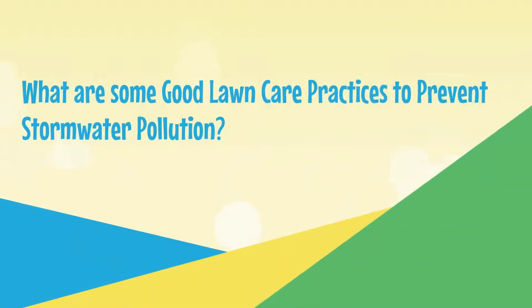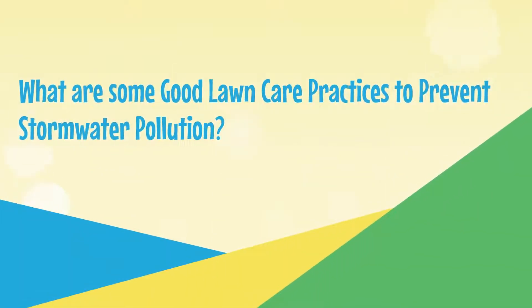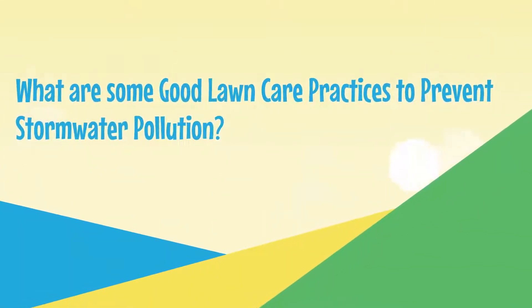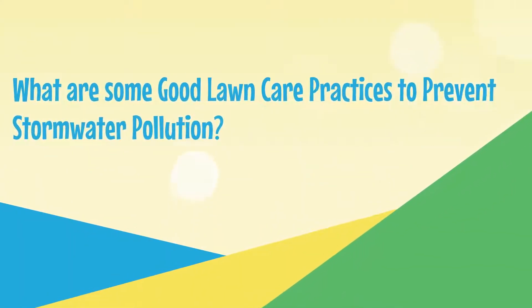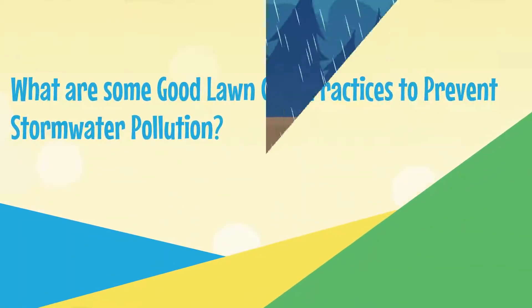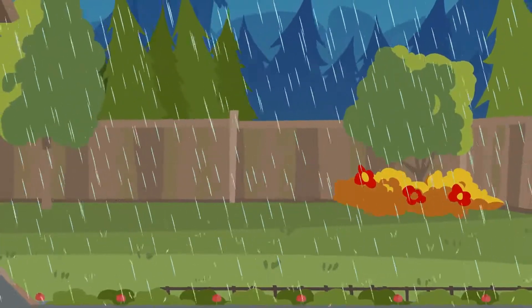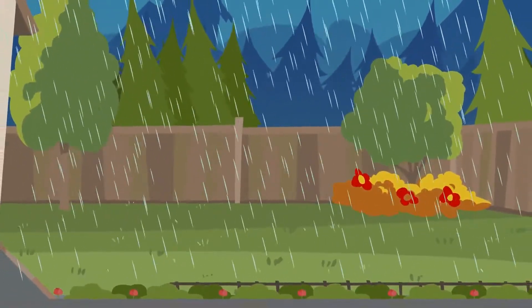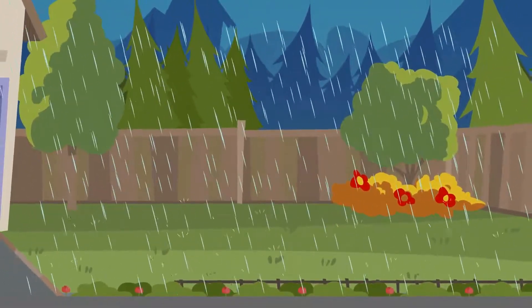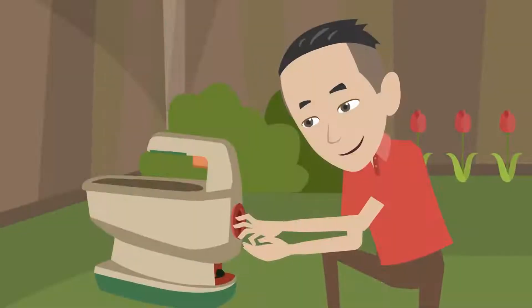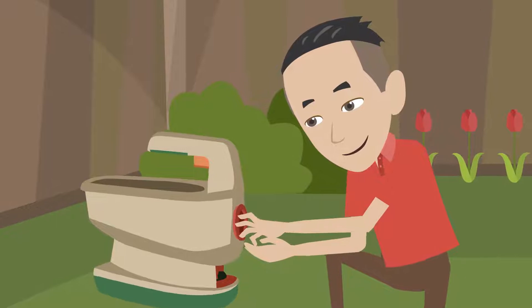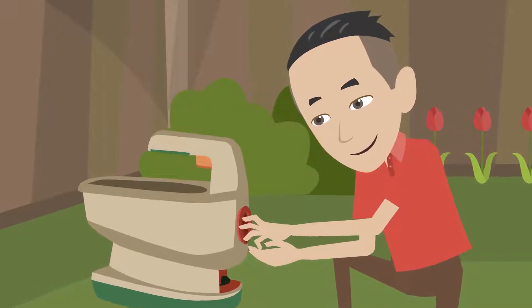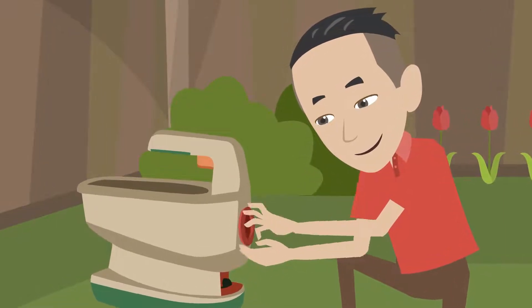What are some good lawn care practices to prevent stormwater pollution? Don't apply fertilizers or herbicides right before a rainfall event. Use correct fertilization equipment settings so there's no over-fertilization.